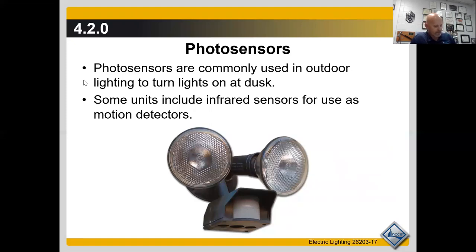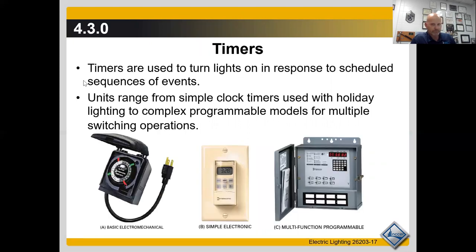Timers are used to turn lighting on or off in response to known scheduled sequences. Time clocks are often used in conjunction with photocells to turn off lighting when it's no longer needed. For example, an industrial building may use a photosensor to activate outdoor lighting at dusk and a time clock to turn it off after the last worker has left.